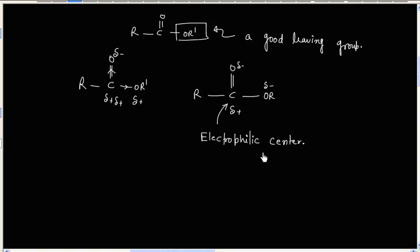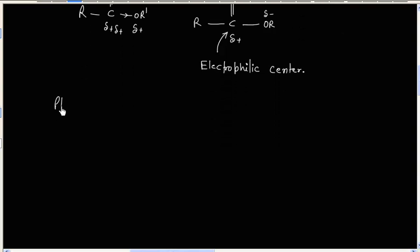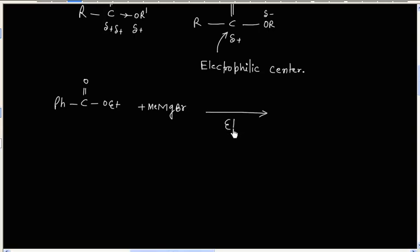Reactions of Grignard reagent with ester is an electrophilic-nucleophilic reaction. For example, consider a reaction with MeMgBr in ether solvent. Grignard reagent is used in ether solvent because it is very reactive and can react with water, so water is generally not used as solvent for Grignard reagent.